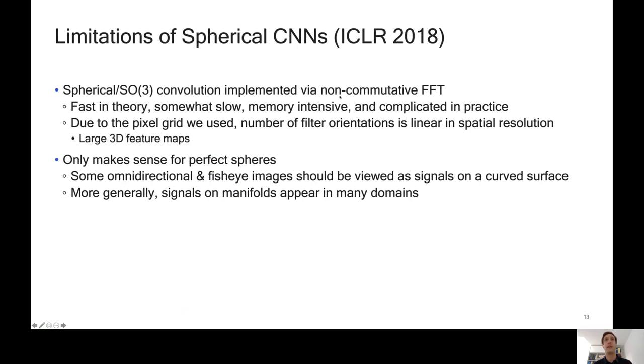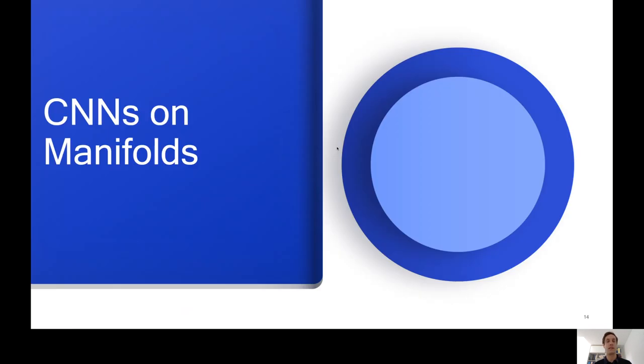This is from 2018, and there are a number of limitations to this work. First of all, the spherical convolution is implemented via a rather complicated thing called a non-commutative fast Fourier transform, which should be fast in theory, especially if you have large filters, but is somewhat slow and memory intensive and complicated in practice. And the pixel grid is also not ideal. You have the fact that the number of filter orientations has to scale with the spatial resolution, which is a bad property. And moreover, it only makes sense for perfect spheres. So if you have an omnidirectional image that isn't really on a sphere, then this doesn't actually make sense. You need a convolutional net on a manifold. Fisheye images, same thing.